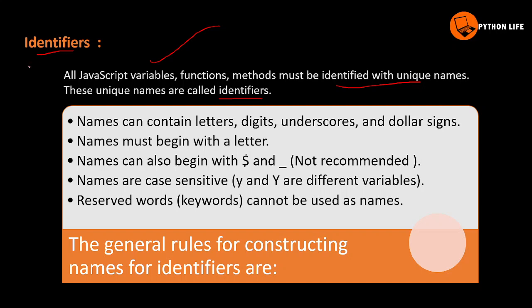These unique names are called identifiers. The general rules for constructing names for identifiers: names can contain letters, digits, underscores, and dollar signs. The combinations allowed are letters, dollar sign ($), underscore, digits, and letters.